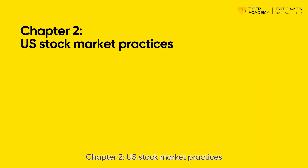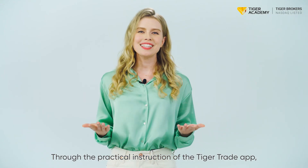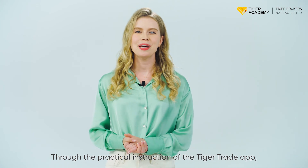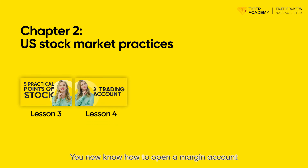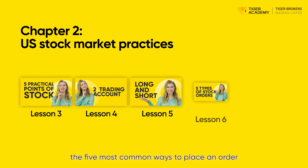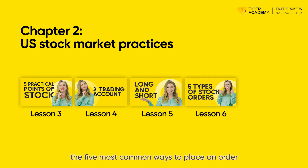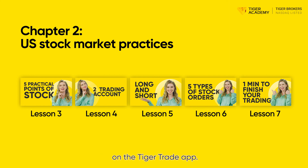Chapter 2: US Stock Market Practices. This chapter explains how to operate with US stocks. Through the practical instruction of the Tiger Trade app, you've gained a lot of basic knowledge about US stock trading. You now know how to open a margin account and understand the advantages and disadvantages of going long and short. The five most common ways to place an order will not be difficult for you, and it will be easier to read market quotations, conduct trades, read hotspots, and check announcements on the Tiger Trade app.